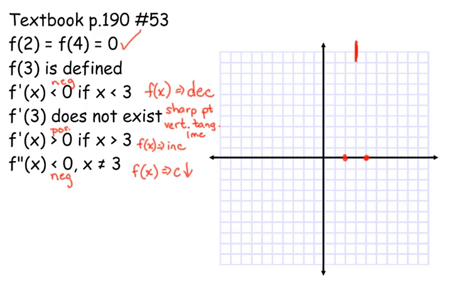Putting all these pieces together: to the left of 3 I'm decreasing, to the right of 3 I'm increasing, and I'm always concave down. I have to go through those two points. The easiest thing to draw is what I'm visualizing — a function that looks like this. Keep it simple. Use all the characteristics but don't throw anything extra in. And after you've done that, go back through and make sure all the characteristics are satisfied.